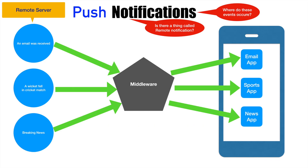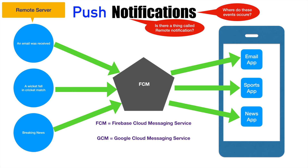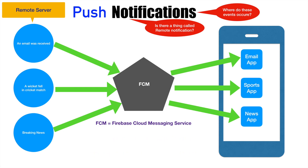Generally, this middleware is called a push notification service provider. In Android, we use a very specific term called FCM, or Firebase Cloud Messaging Service. It is the responsibility of the Firebase Cloud Messaging Service to orchestrate these push notifications between the remote server and the mobile device. Before Firebase Cloud Messaging Service came into effect, there was another service called GCM, Google Cloud Messaging Service. And even before GCM, there was something called C2DM, that is Cloud to Device Messaging Service. But both GCM and C2DM are now deprecated — they are no more in use. So for all practical purposes, in the further discussion we will be mainly concentrating on FCM, that is Firebase Cloud Messaging Service.